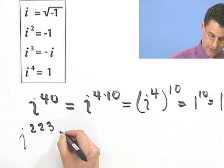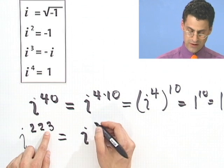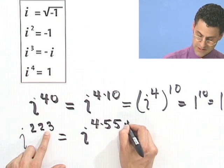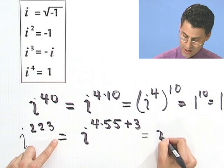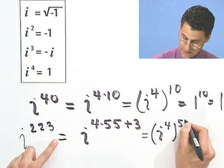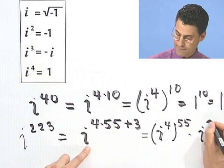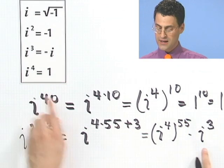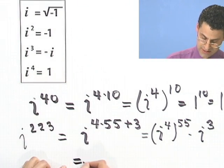So i to the 223rd equals i to the quantity 4 times 55 plus 3. Using laws of exponents, that equals i to the fourth all raised to the 55, times i cubed. i to the fourth is just 1, so that's 1 to the 55 times i cubed. And i cubed equals minus i.